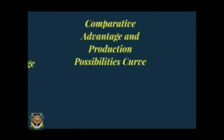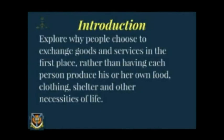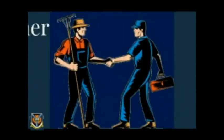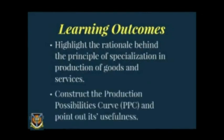This study session will point out why economic systems based on specialization and the exchange of goods and services are generally far more productive than those without specialization. You will explore why people choose to exchange goods and services rather than having each person produce his or her own food, clothing, shelter, and other necessities. Learning outcomes: you should be able to highlight the rationale behind specialization in production, and construct the Production Possibilities Curve (PPC) and point out its usefulness.